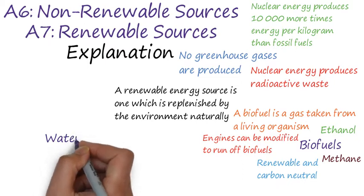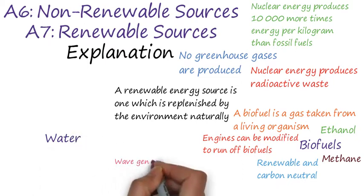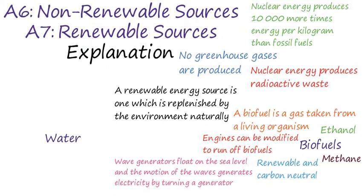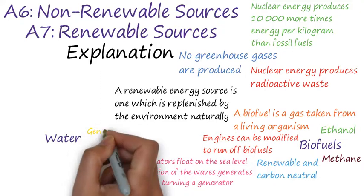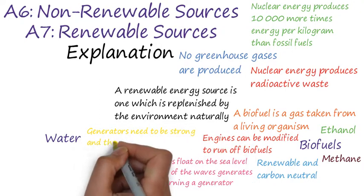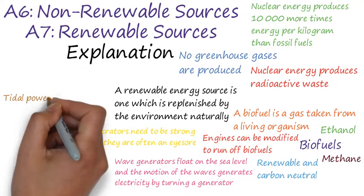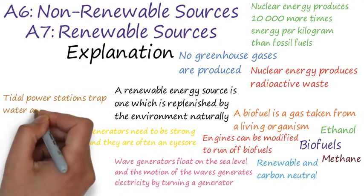The next type of renewable energy we'll be studying is energy from water. Wave generators float under the sea level and bob up and down due to the current. The motion of the waves generates electricity by turning a generator. A cable delivers the electricity produced to the land. Issues with this method are that generators need to be strong enough to withstand storms, the cables along coastlines are an eyesore, and tidal patterns may also be inconsistent.